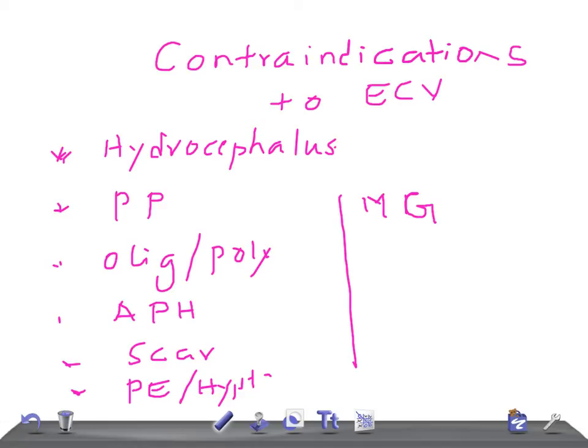You can go ahead with the cesarean section. So these are the contraindications to ECV: hydrocephalus, placenta previa, oligo or polyhydramnios, history of antepartum hemorrhage, scar on uterus like myomectomy scar or previous cesarean scar, multiple gestation, preeclampsia or hypertension, and if there is a plan to do cesarean section.